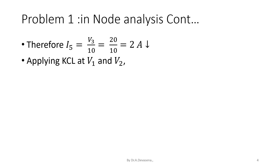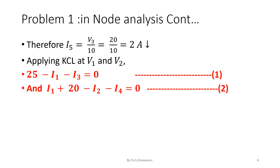Now consider node V1. For that, the KCL equation is 25 minus I1 minus I3, that is equal to 0. Consider this as equation 1. And consider node V2. That is, I1 plus 20 minus I2 minus I4, that is equal to 0. Consider this as equation 2.